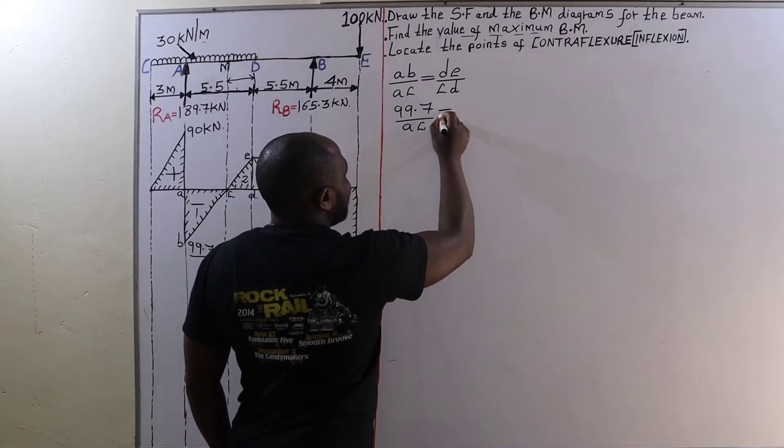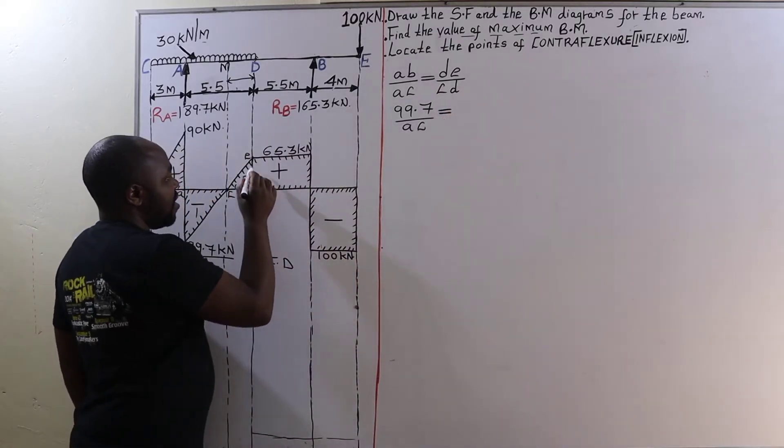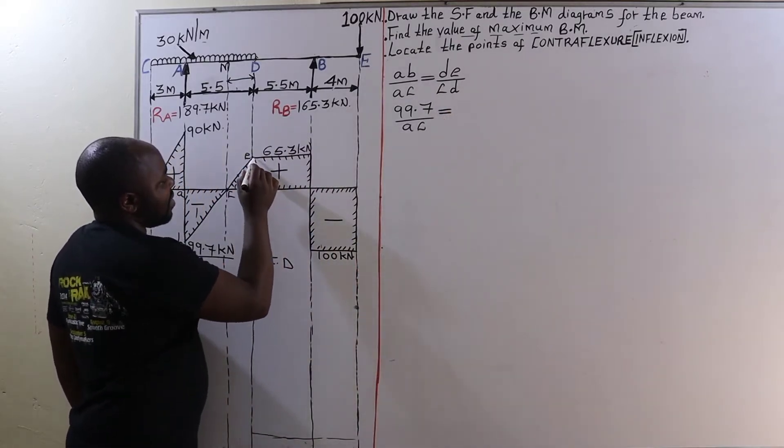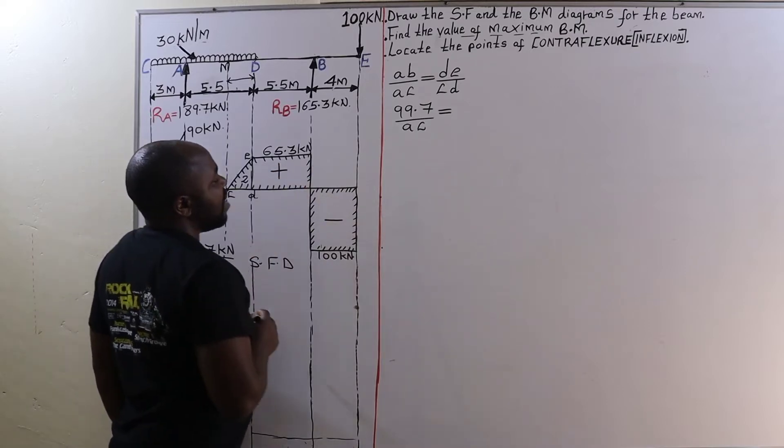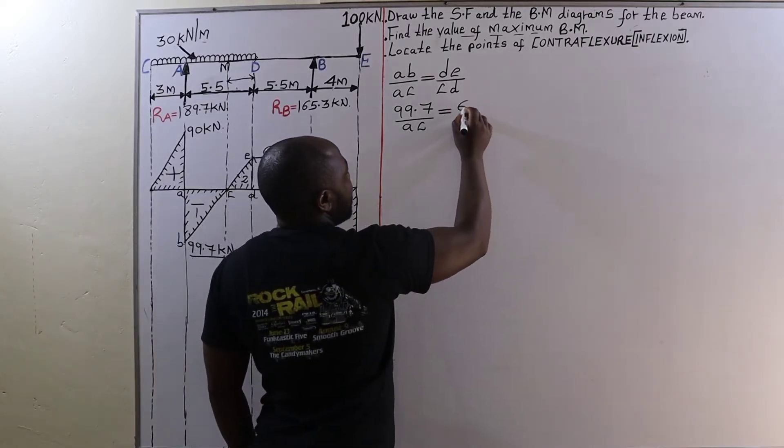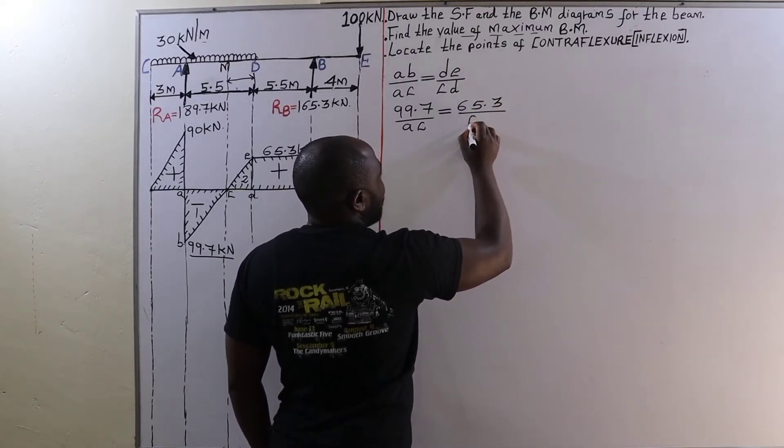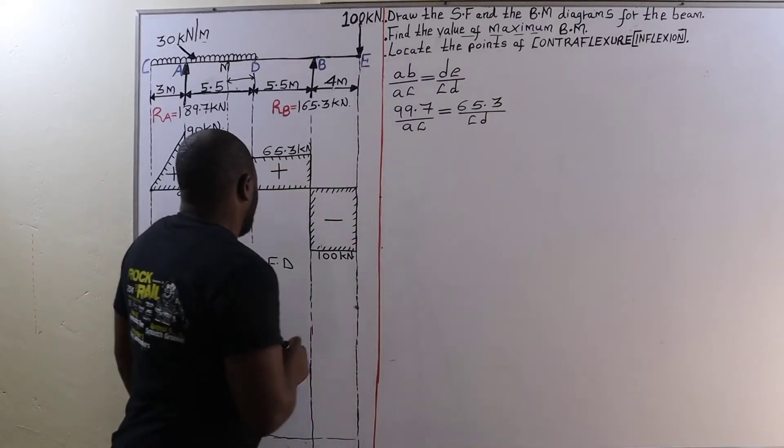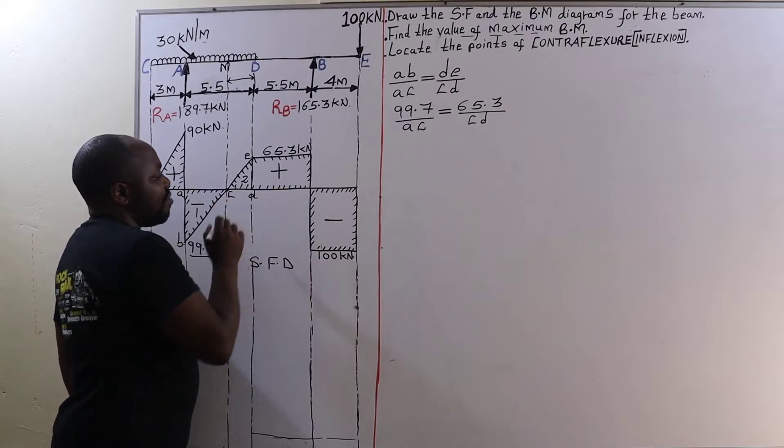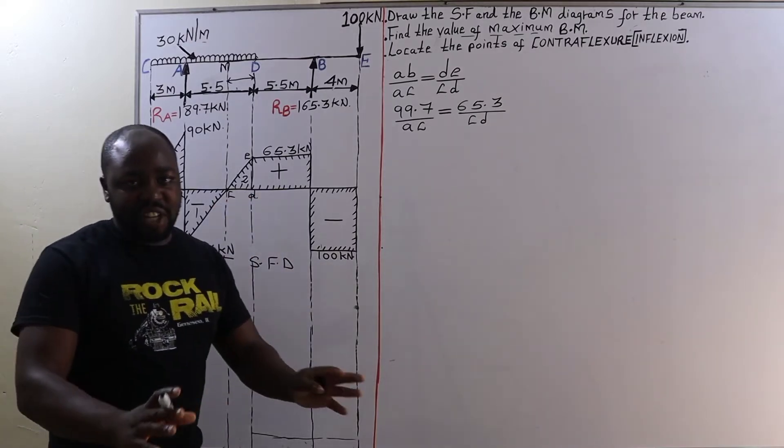Is equal to D to E, which in this case is 65.3 units. Therefore 65.3 units all over the distance from C to D, which again we don't know its value.